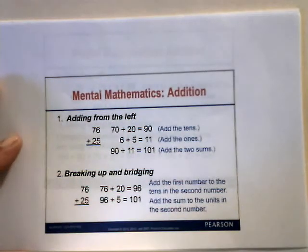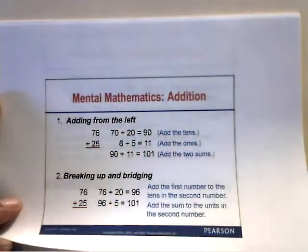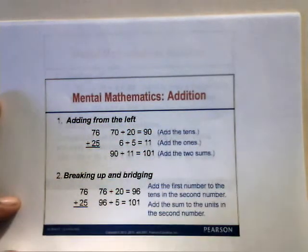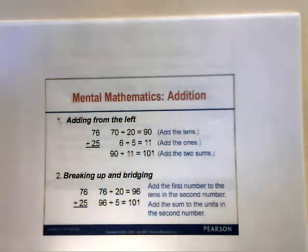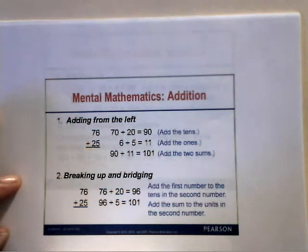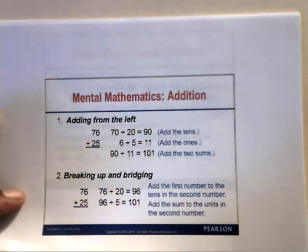Let's look at mental mathematics for addition, starting with adding from the left. For 76 plus 25, we first add 70 and 20, which gives us 90. Then add 6 plus 5, which is 11. Then add 90 plus 11, which gives you 101. Here you're adding the tens, then adding the ones, and then adding the two sums together.